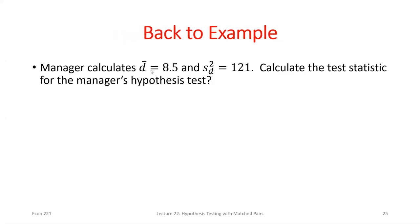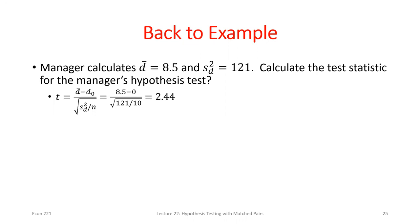Let's say that same example — I want to do a hypothesis test. I have that sample mean difference, the variance of that difference variable, and sample size of 10. I use that value of zero — asking whether there was a change in workstation layout — and plug everything in to get a test statistic of about 2.44. Once we identify the correct test statistic equation, it's really just a matter of plugging in values. The assumed true difference we'll always use zero here.